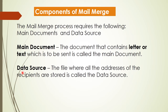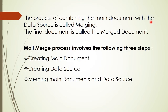The components of mail merge: there are two main components — main document and data source. The main document is the Word page where we draft our letter, invitation, or application — whatever we would like to write, draft, or design. In the data source, we store the details of the receiver's address, name, phone number, and other information. The process of combining the main document with the data source is called merging, and the final document produced is called the merged document.